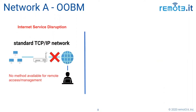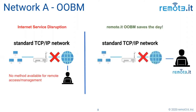If you need to access that network and diagnose what's going on — troubleshoot the router or get to one of those devices — when there's a disruption in internet service, this is an example where out-of-band management can really help.